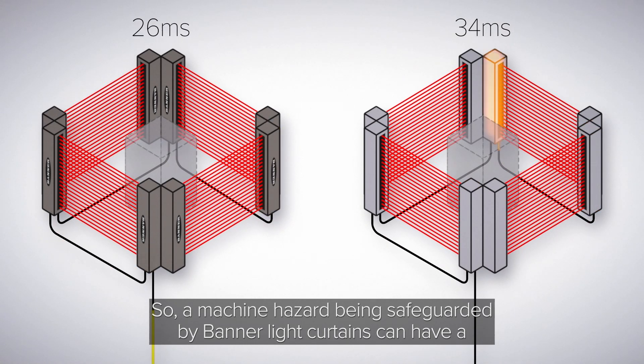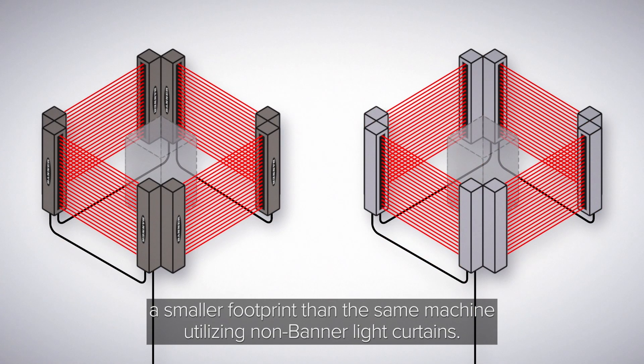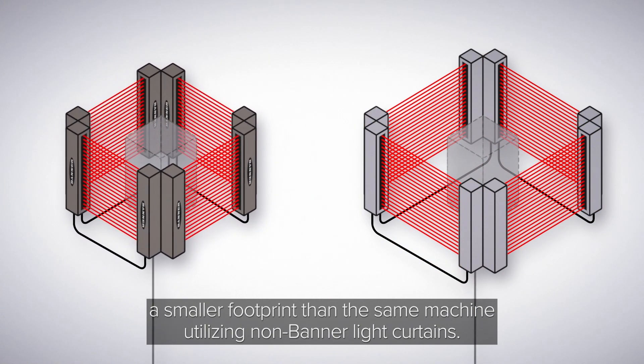So a machine hazard being safeguarded by Banner light curtains can have a smaller footprint than the same machine utilizing non-Banner light curtains.